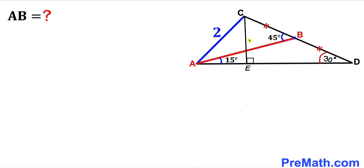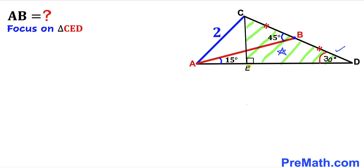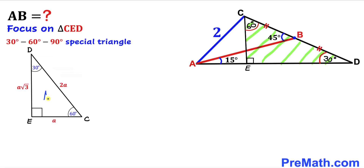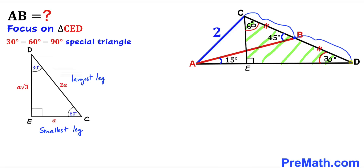In this next step I have dropped a perpendicular CE on line AD, and as a result we got right triangle CED. Let's focus on this right triangle CED: we know this angle is 30 degrees, this angle is 90 degrees, so therefore this angle has got to be 60 degrees. This is our special 30-60-90 triangle. In such a triangle the longest leg is twice the smallest leg. If I call this side length 1, then CE is going to be 1 as well.